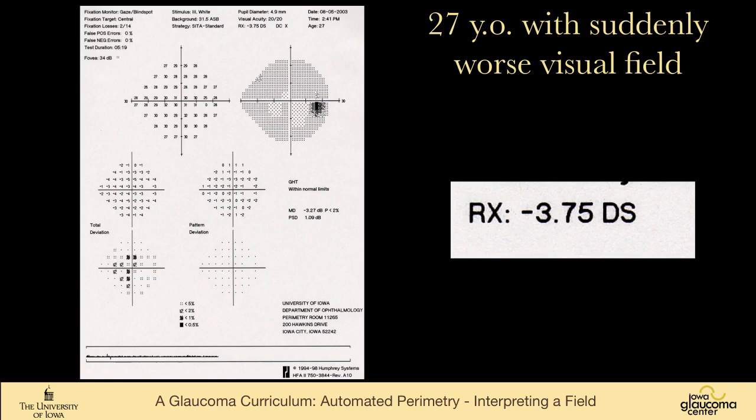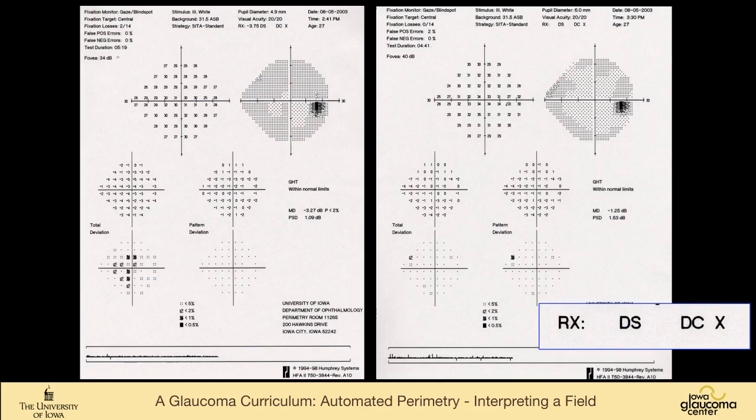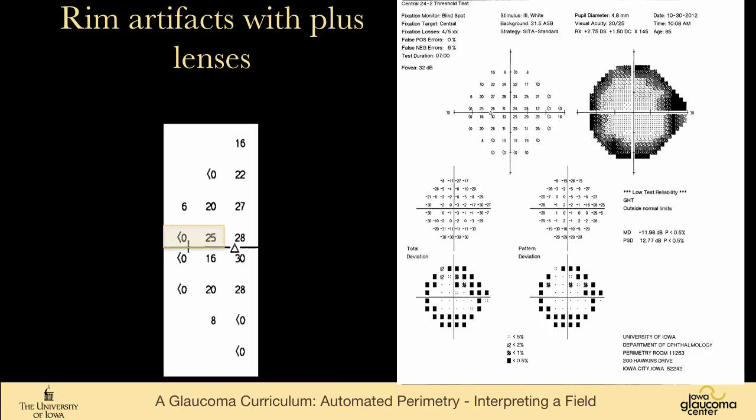Here's a patient, myopic woman, suddenly worse visual field. You can see that the hemifield test is normal. There's no pattern deviation. But her total deviation is depressed, mean deviation down by minus 3.27 decibels. She was corrected with a minus 3.75 sphere. But she'd had LASIK in between. And when she's corrected with her plano prescription, because she's a young patient, she doesn't need a near-add, her field becomes completely normal.